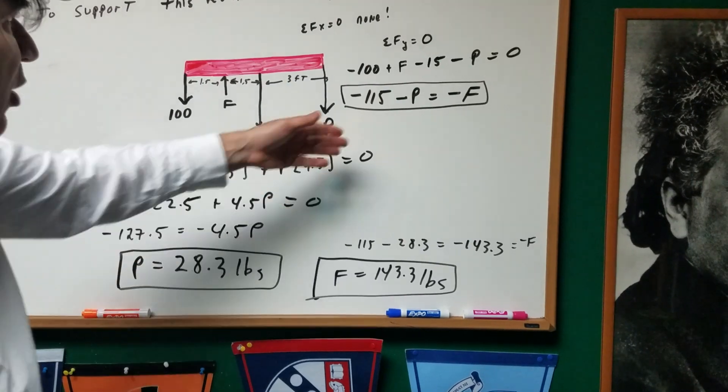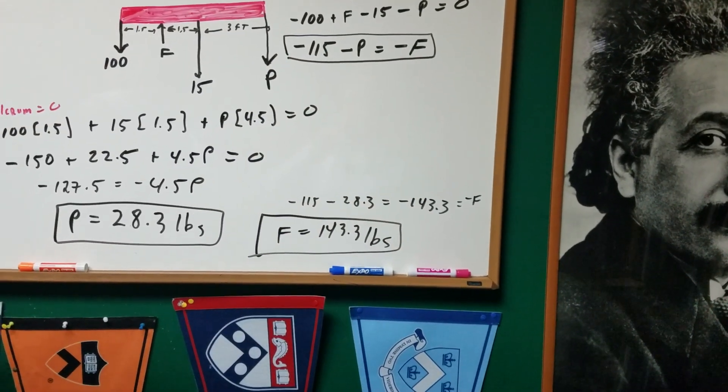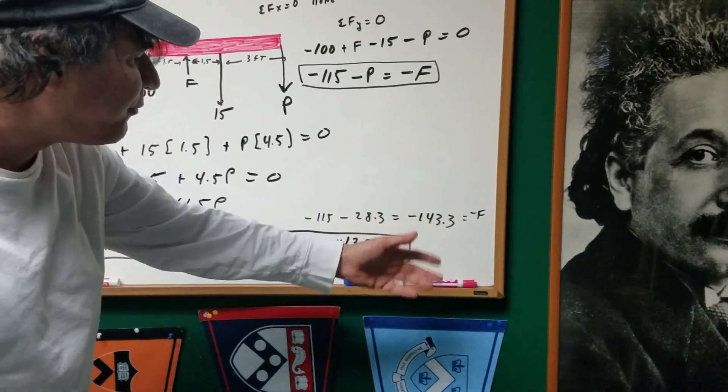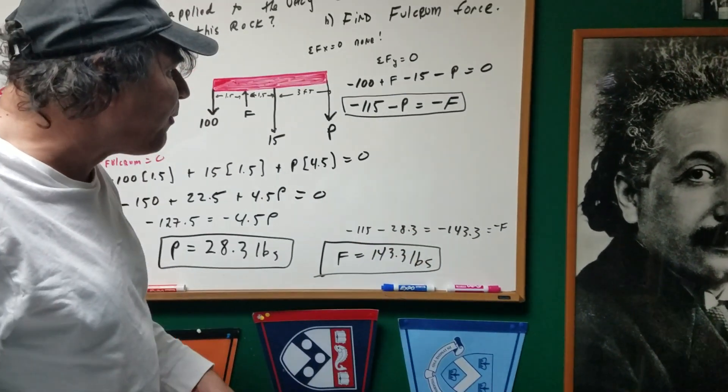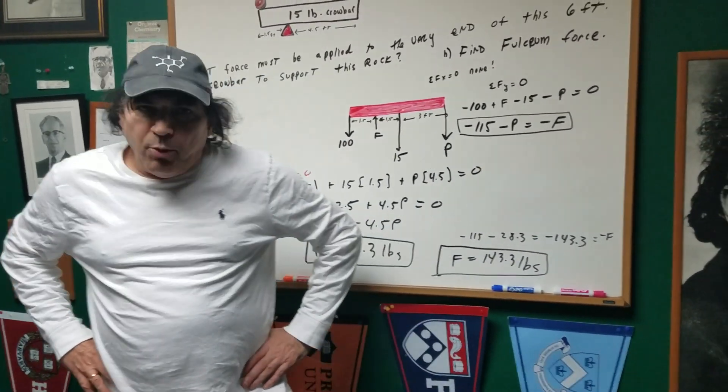So, that gives me the needed force that's to cause equilibrium. Then, once you know P, you can go back to this equation and simply solve for the force. And we get minus 143 is minus f. Therefore, 143.3 pounds equals the force.